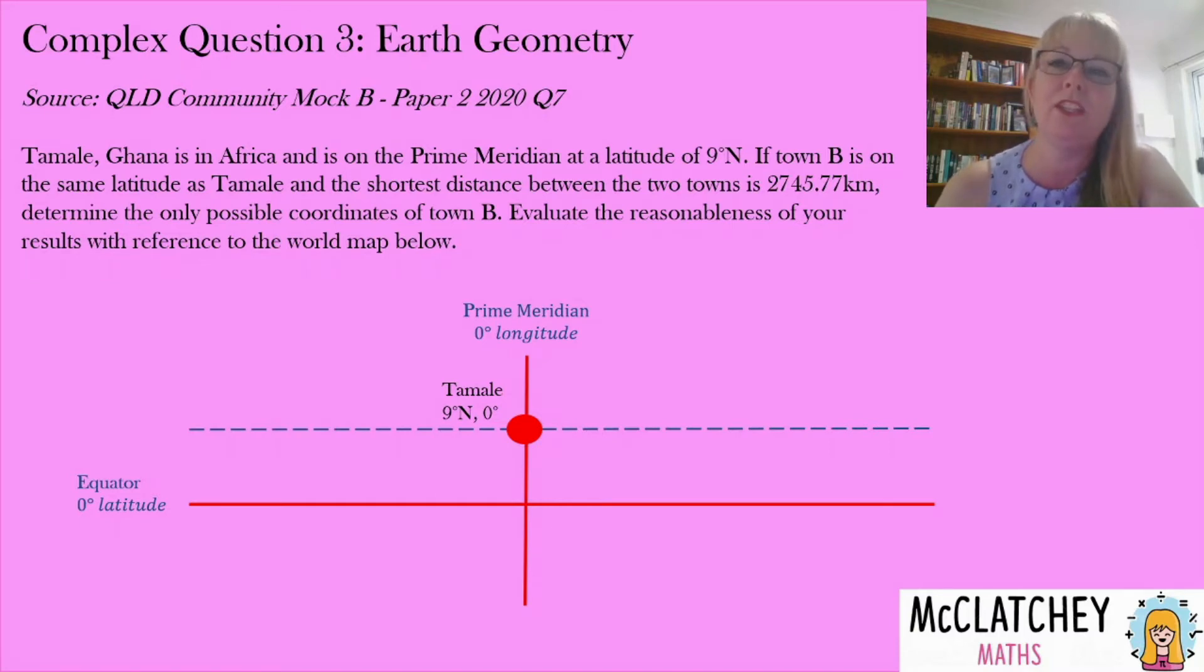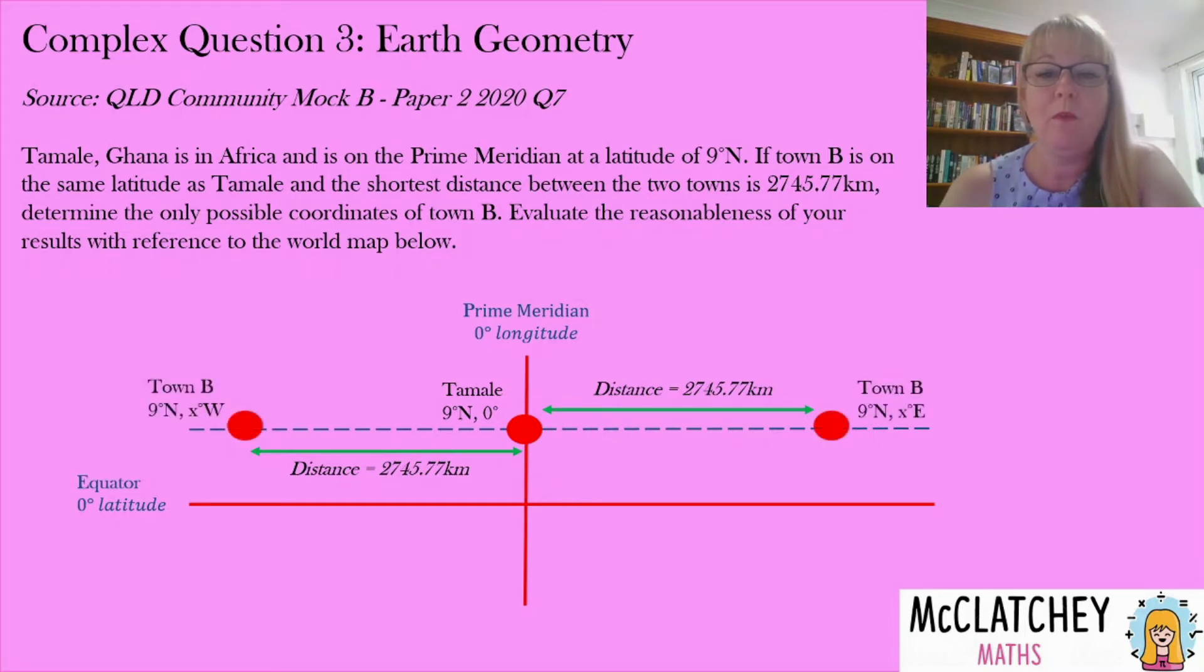Now we need to find town B in relation to Tamale. Well we know they're both at the same latitude and we don't know however that it could be east and it could be west. So we're going to work either direction. So town B could be here both at nine degrees north because they've got that same latitude. One's going to be east, one's going to be west. The only thing they've got in common is that same distance. So we've got to work out what is the actual coordinates of town B and then try and place that on the map and see if it makes sense.